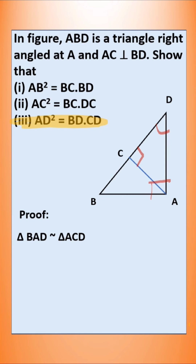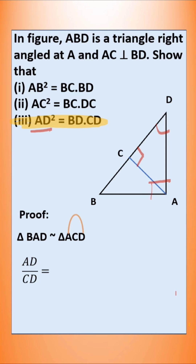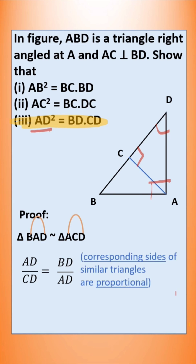So that it is easier to write the ratio. Now we want AD squared. Let us identify where AD is in the first triangle — it is in the last two vertices. Last two vertices of the second triangle is CD. So AD by CD is equal to... Now we have to find where AD is in the second triangle — first and last vertices. First and last vertices of the first triangle is BD. So BD by AD. Corresponding sides of similar triangles are proportional.